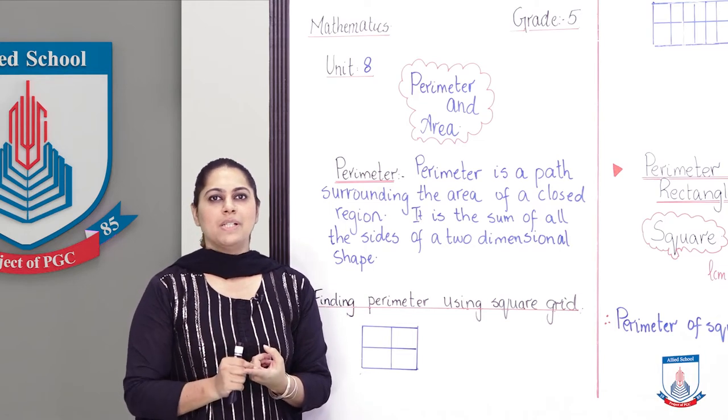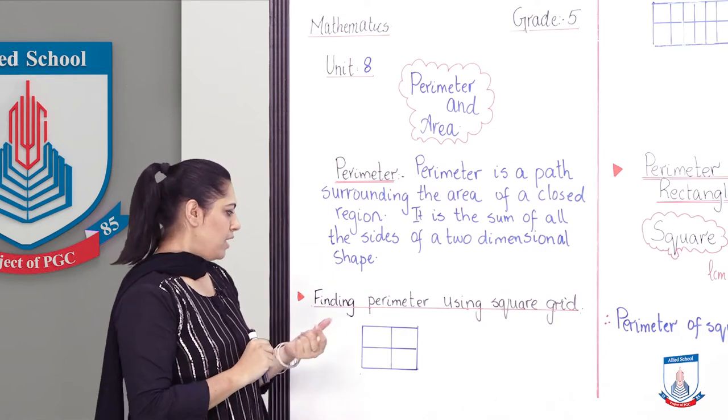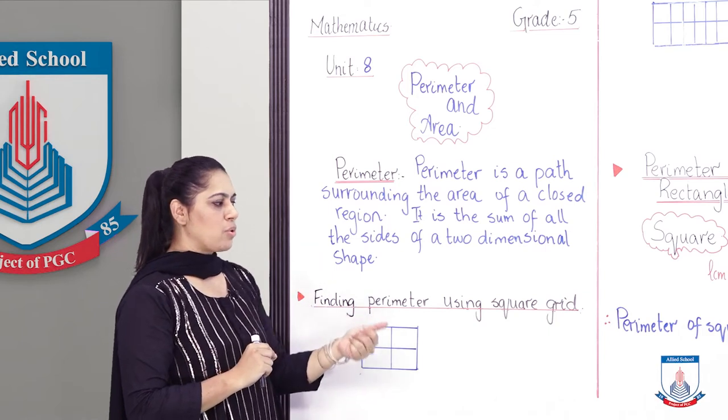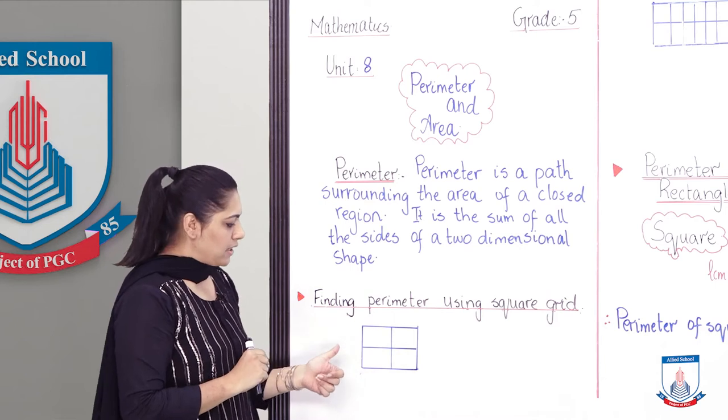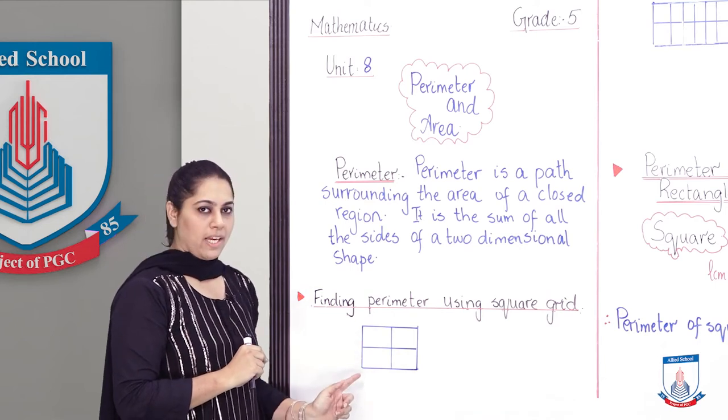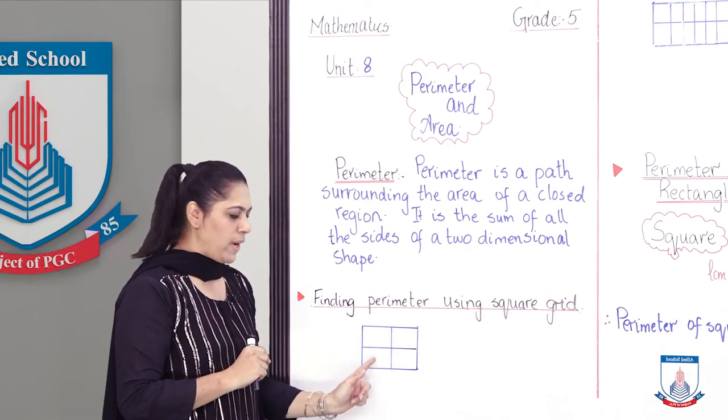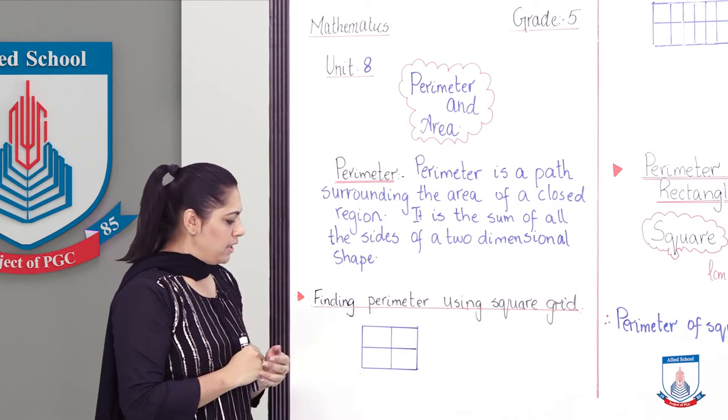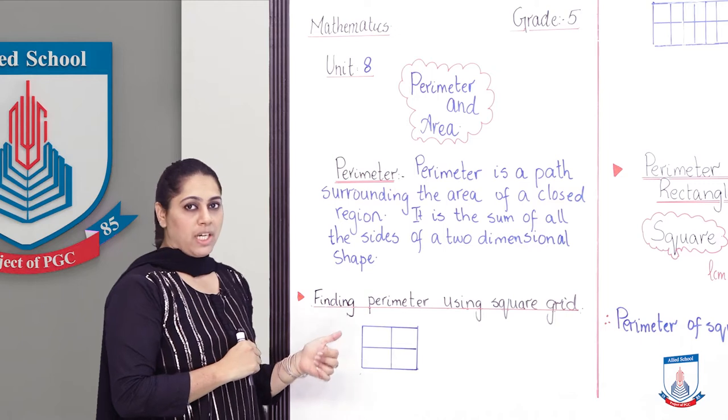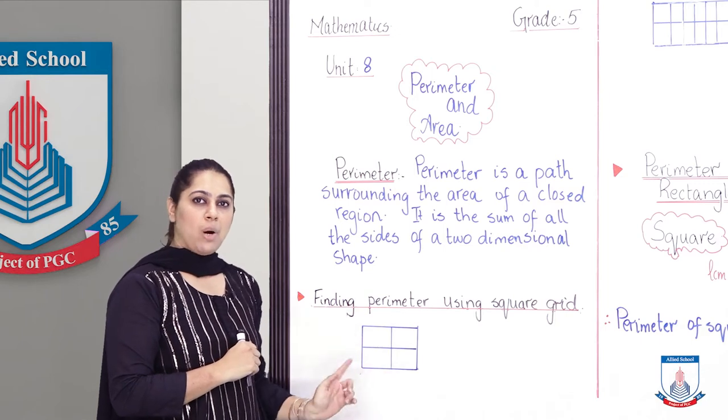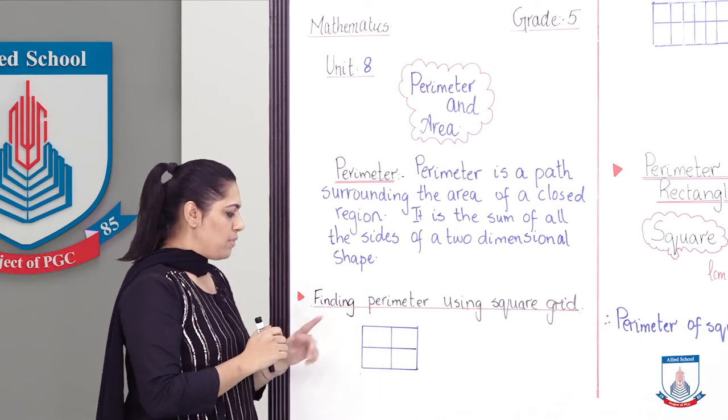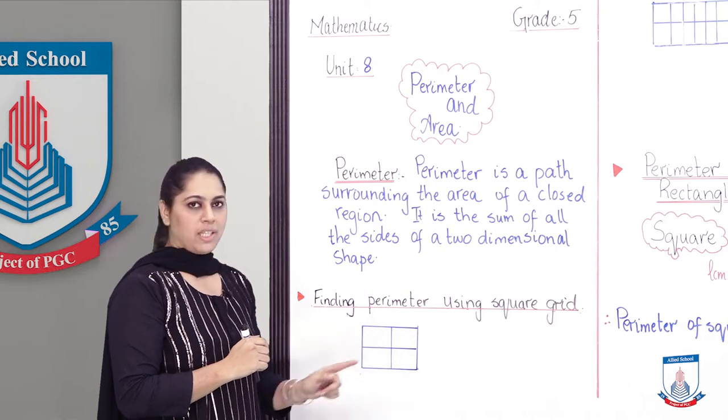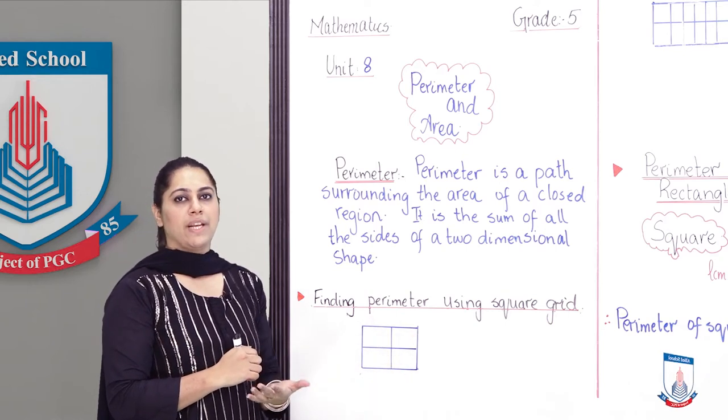Let's look at this example: finding perimeter using a square grid. Here you can see that I have made a square which is made of four small squares. Now I have to find out this perimeter. To find out its perimeter, I need to look at its outer boundary to see how much area it covered, so that we can find out its perimeter.